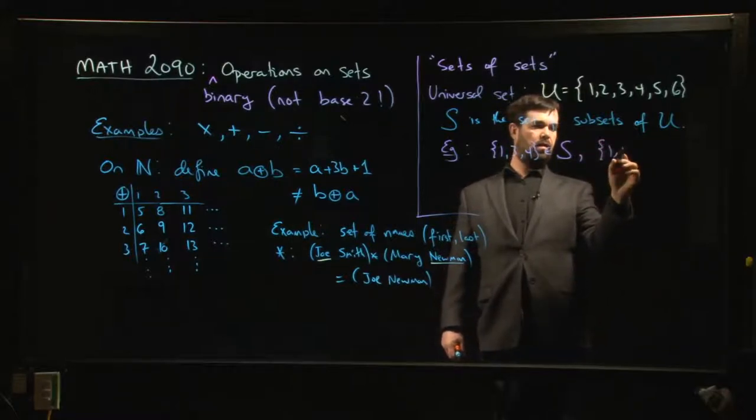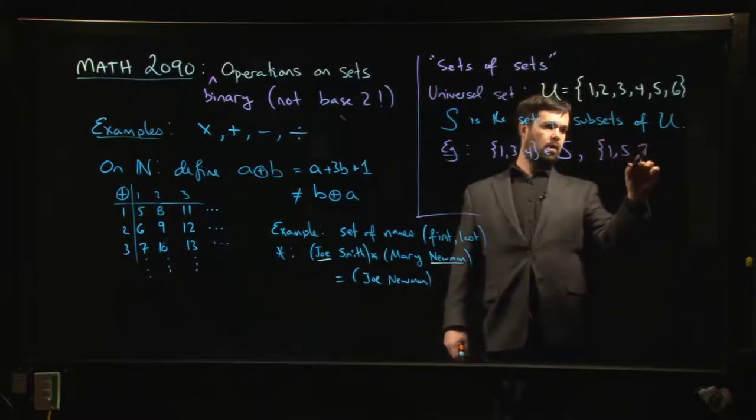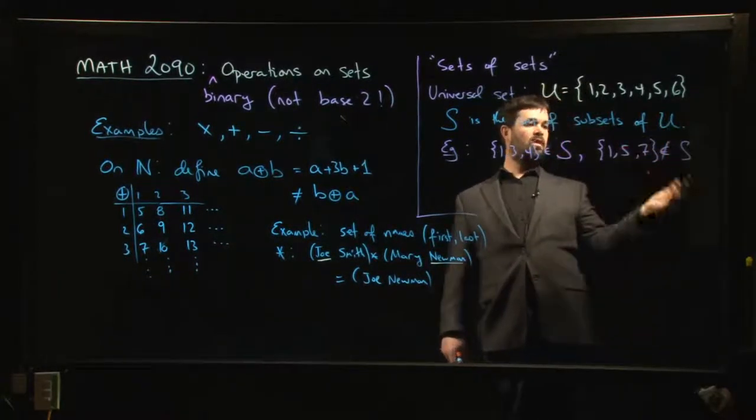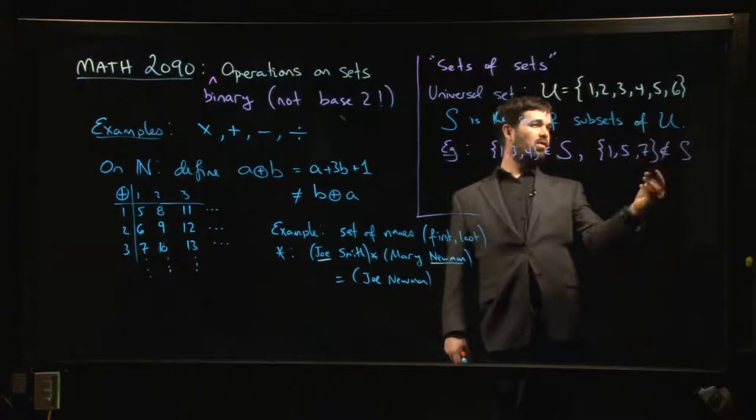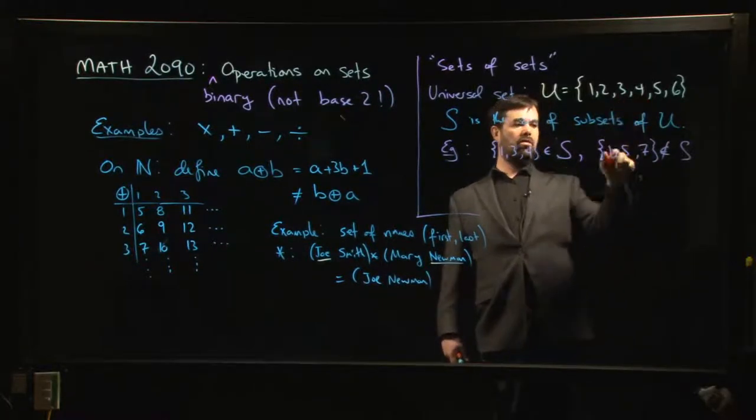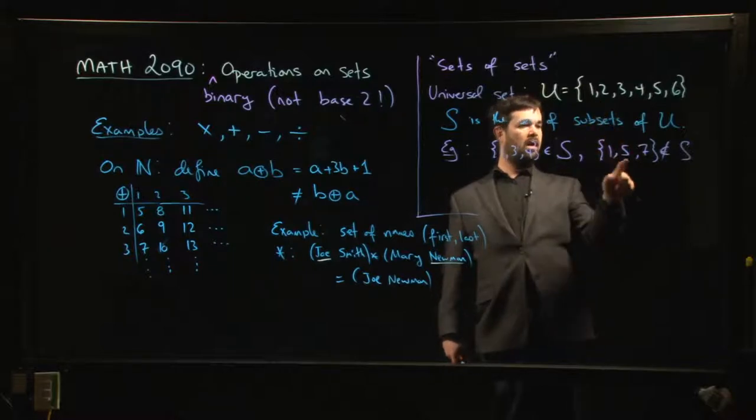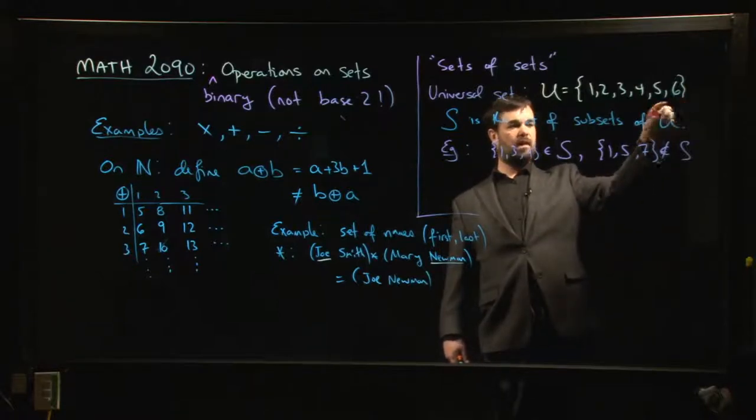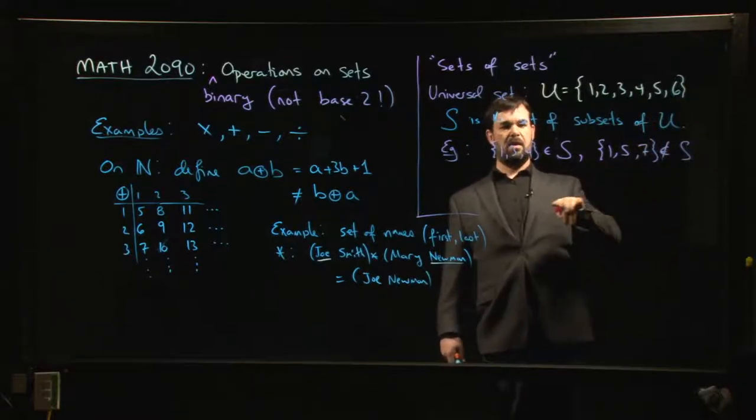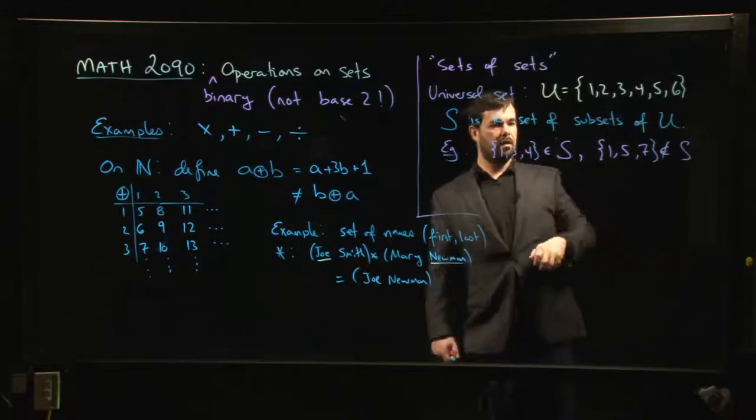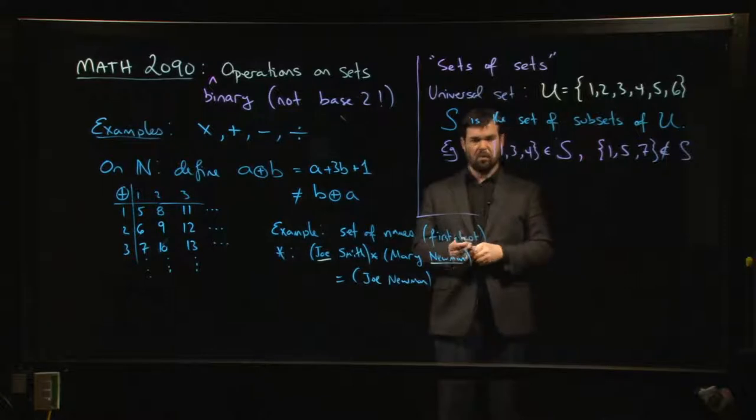Something like this - that would not be an element of S because seven doesn't belong to U, so this isn't a subset of U. The way something fails to be a subset: yes, one and five are in there, but if you have even one member of your set that doesn't belong to the larger set, then you don't have a subset. Being a subset means that everything in here is also in there.